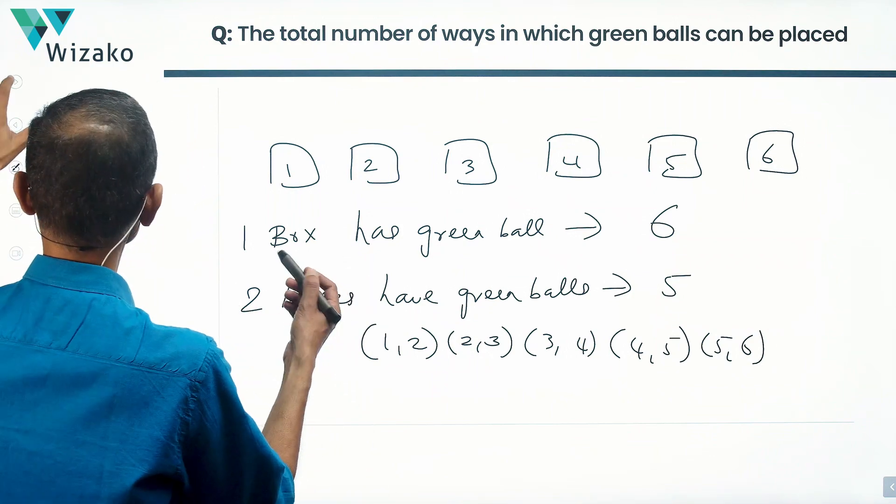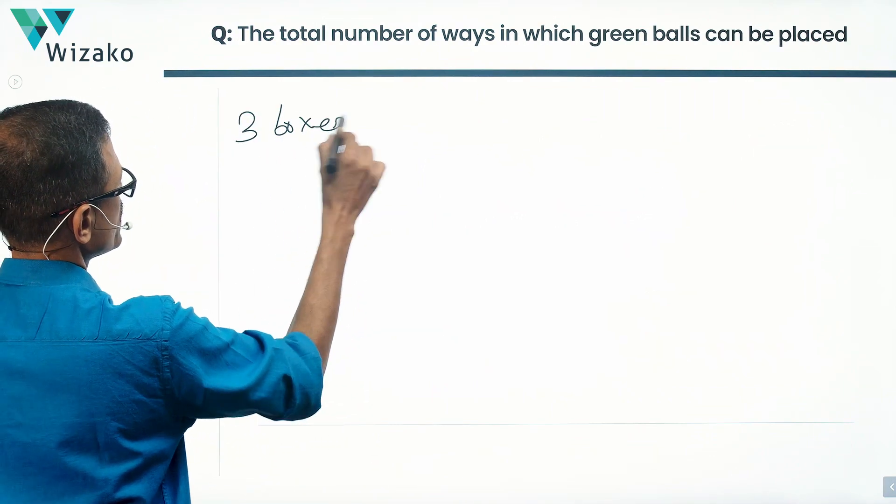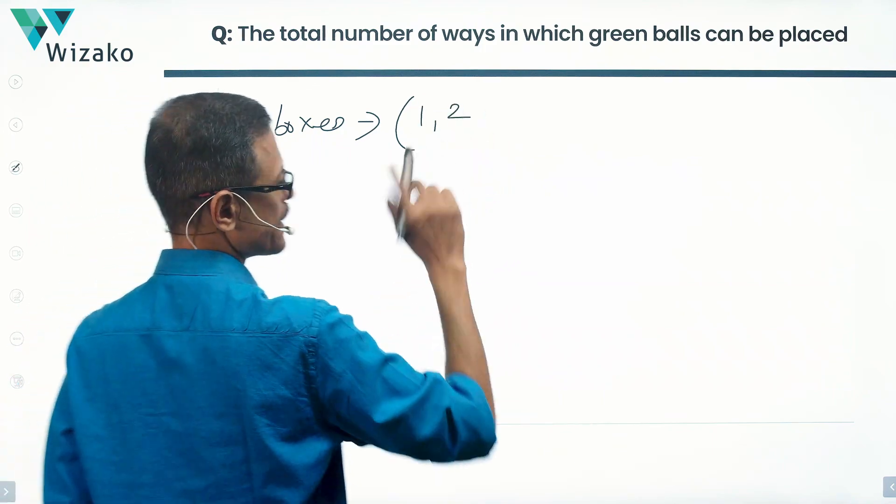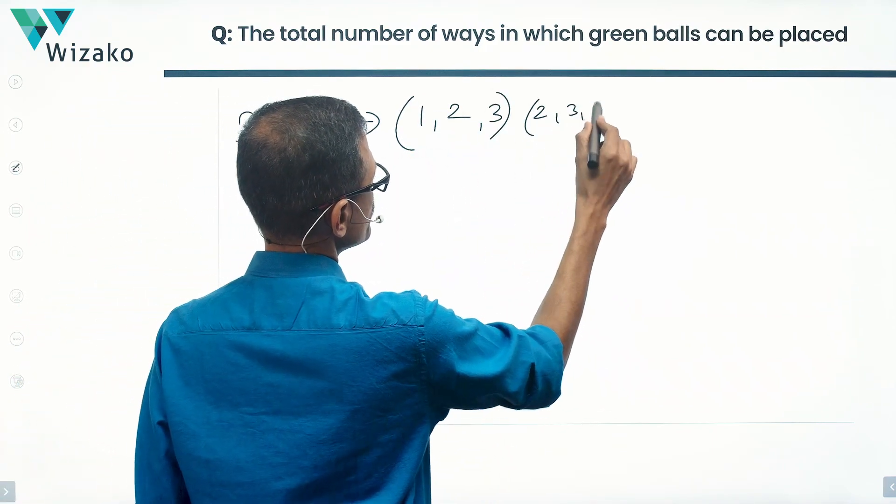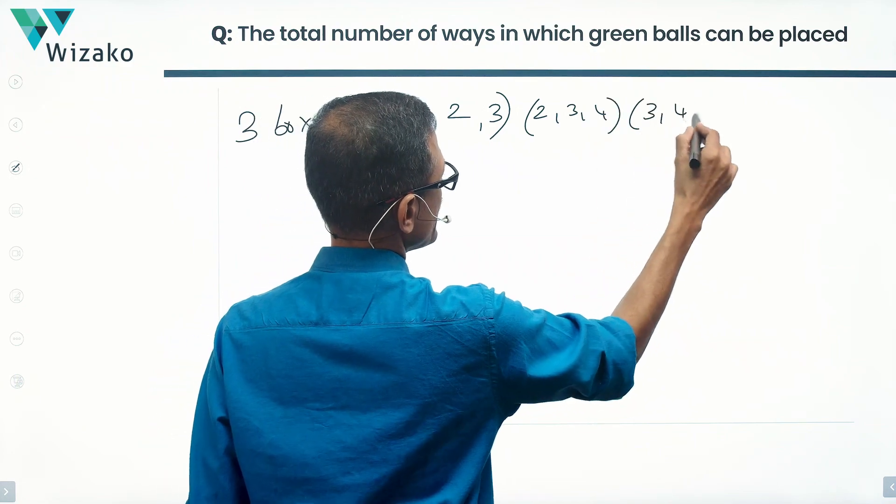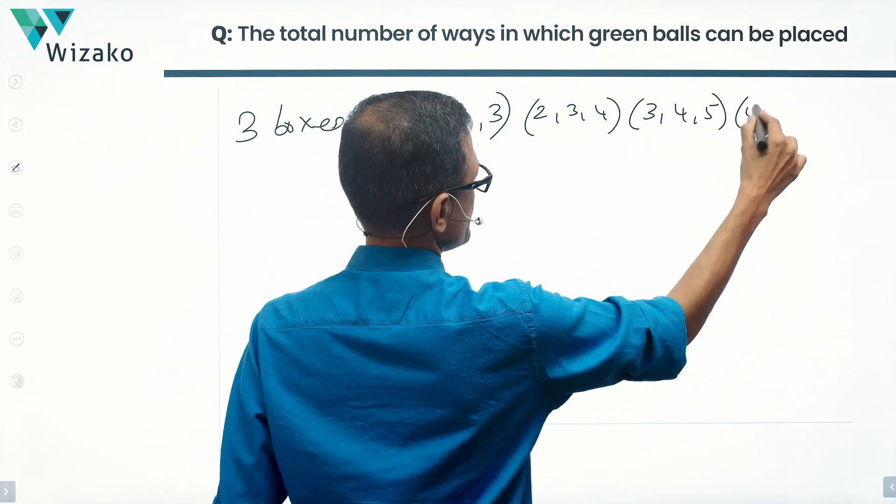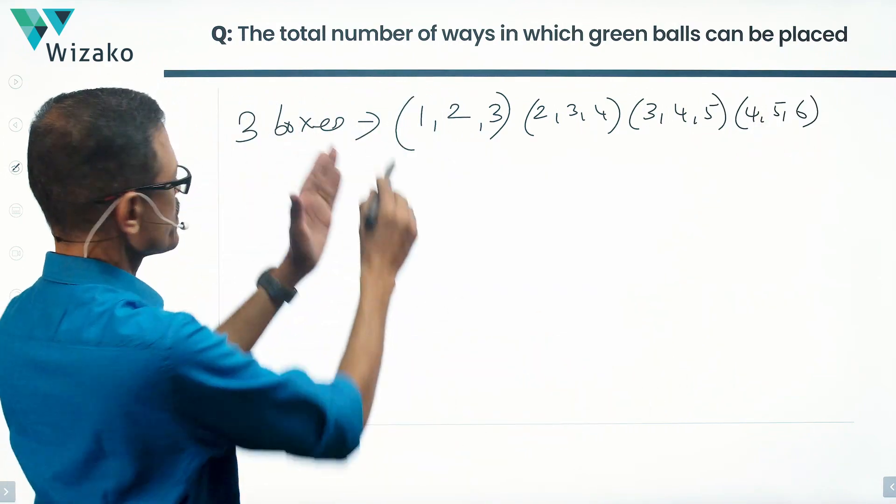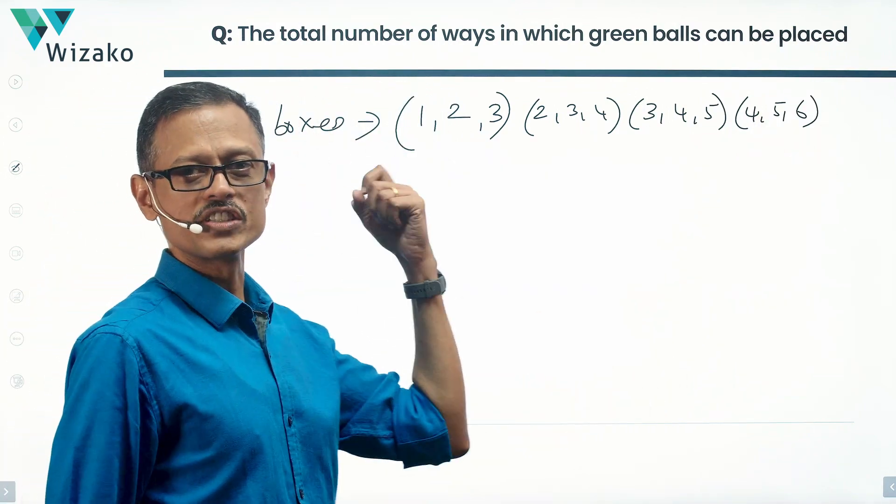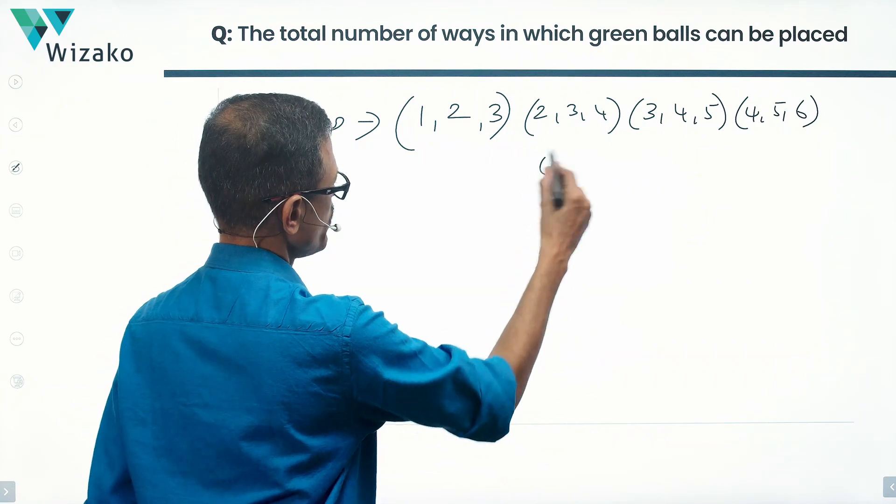Now can 3 boxes have green balls? Yes, 3 boxes have green balls. What are the possibilities? Consecutively numbered. It's not 6C3 again. 1, 2, 3, then 2, 3, 4, then 3, 4, 5. Anything else possible? Yes, 4, 5, 6. These are all the consecutively numbered ones. So 3 boxes contain green balls and the boxes need to be consecutively numbered. 4 such possibilities exist.